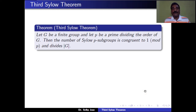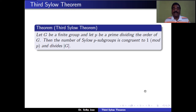We assume G is a finite group and P is a prime number which divides the order of G. Then the number of Sylow P-subgroups is congruent to 1 mod P, and that number divides the order of G. So we need to show two things: the number of Sylow P-subgroups equals 1 plus P times something, and that number divides the order of the group.